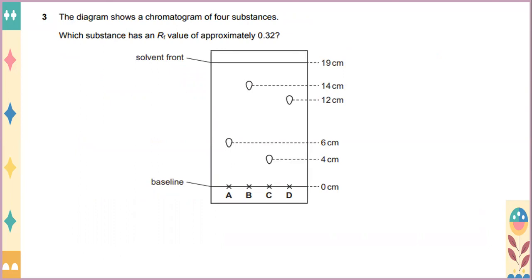The diagram shows a chromatogram of four substances, which substance has a retention factors value of approximately 0.32. Based on the calculation, retardation factors is distance traveled by substance divided by distance traveled by solvent. So in this case, if we take A from the baseline, we have distance traveled by substance for A is 6 divided by distance traveled by solvent, which is 19. You get the value of 0.312, and you round to the nearest value, you get 0.32. So the answer will be A.